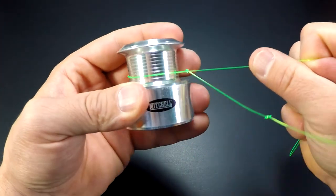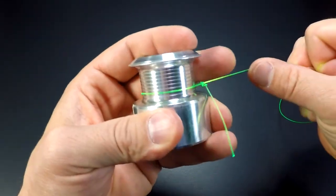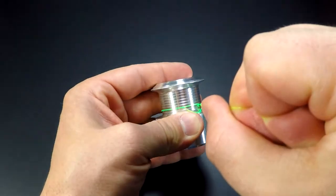Now it's time to cinch up the knot. Pull on the main line working it back and forth until the knot is nice and tight on the spool.